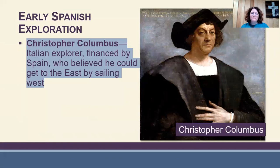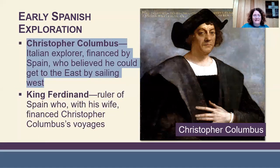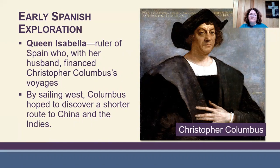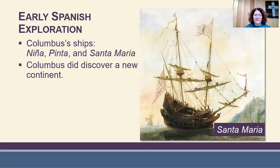Now looking at the Spanish — this is actually who Christopher Columbus sailed for. Columbus was actually Italian, but his voyage was financed by Spain. He went to King Ferdinand and Queen Isabella of Spain and said he believed he could get to the east by sailing west, and they agreed to finance it. He hoped to discover a shorter route to China and the Indies. In August 1492, he set sail on his three ships: the Niña, the Pinta, and the Santa María. But Columbus never actually made it to India — he instead discovered a new continent. In October, he landed on an island he thought was the Indies, which is why he called the people there Indians.